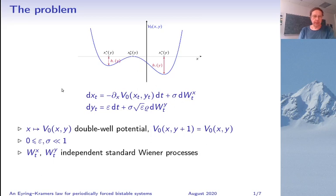Let me start right away by showing you the system we're interested in. It's a two-dimensional stochastic differential equation. The drift for the first variable X derives from a potential V₀, which is a double well in X like in the picture here and periodic in Y.